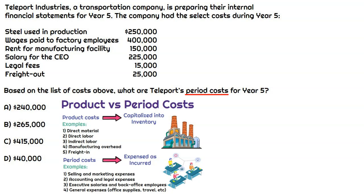Steel used in production for $250,000 is a direct material used to create the product Teleport Industries sells, so that cost is capitalized into inventory — it's a product cost. Wages paid to factory employees for $400,000: because these wages are paid to factory employees working on the product, they're a product cost. Since it says factory employees, we're confident the whole amount is a product cost.